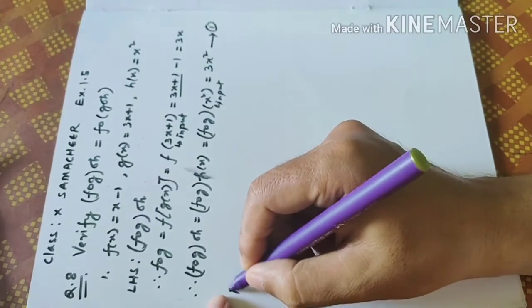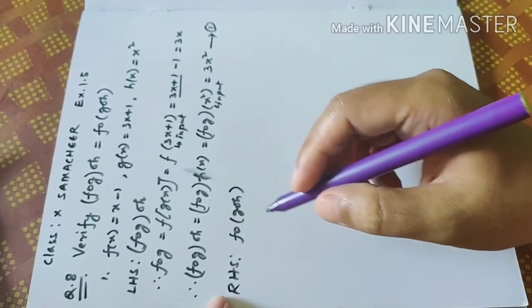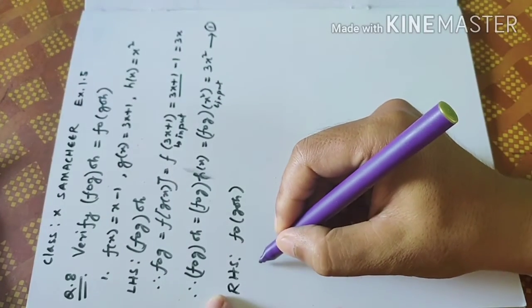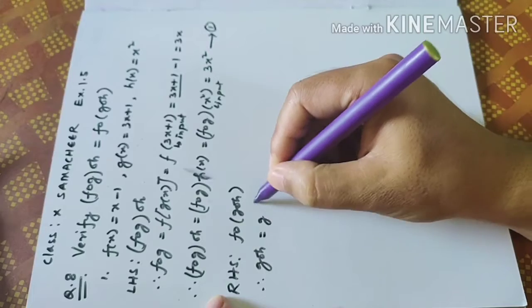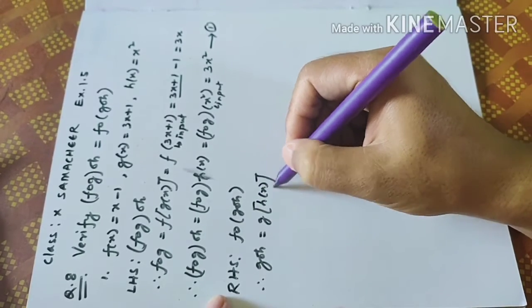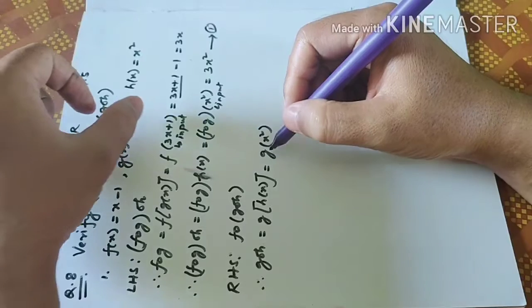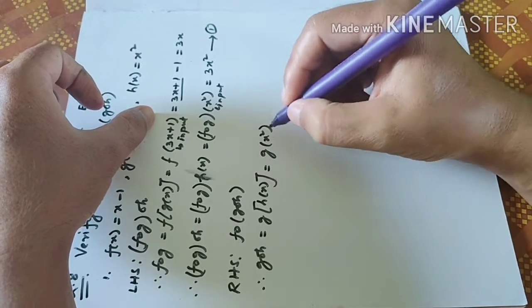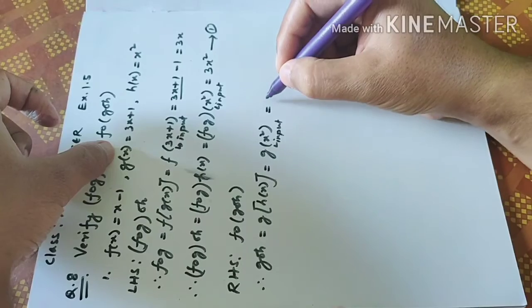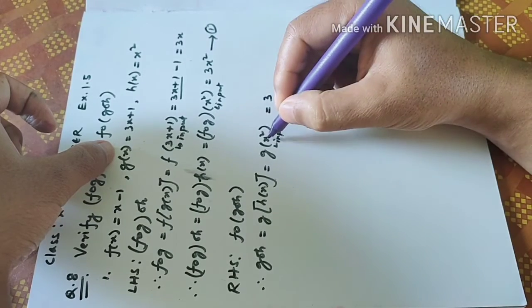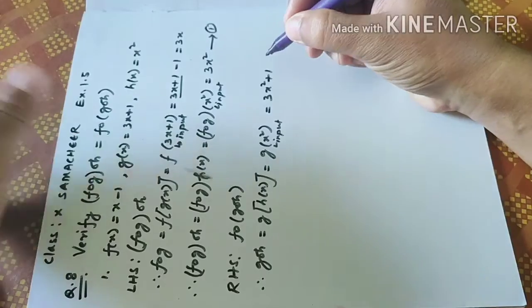Now find the right-hand side: FO(GOH). Here also we have two operations. First, find GOH. g(h(x)): h(x) is x square, so x square becomes the input for g. g(x) is 3x plus 1, and wherever x is there write x square, giving 3x square plus 1. So GOH equals 3x square plus 1.